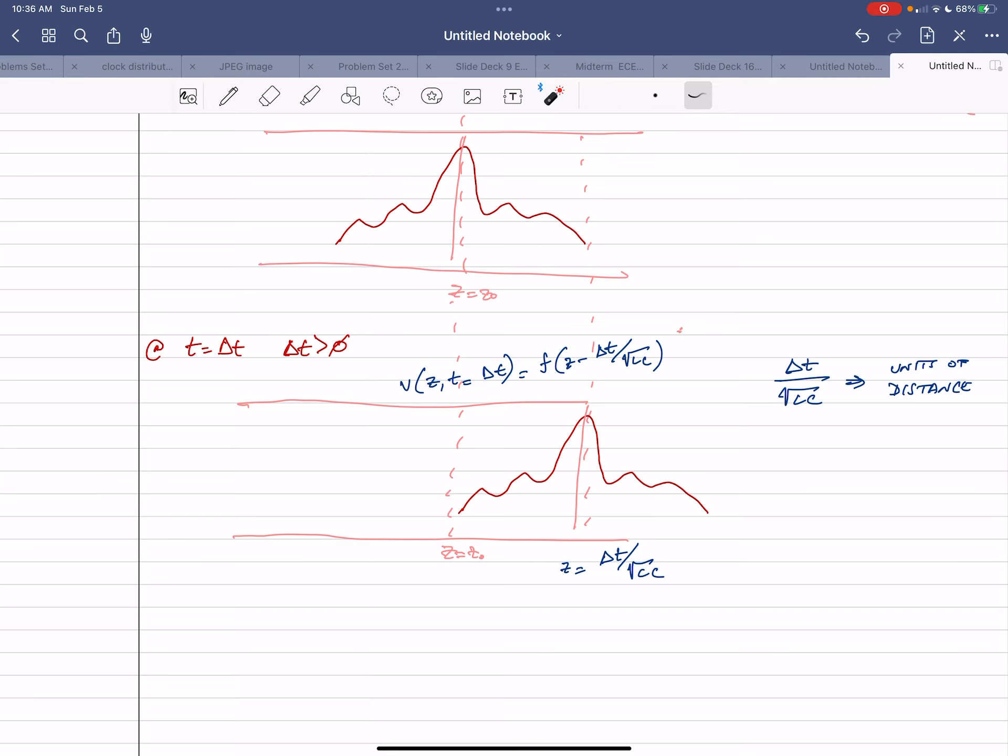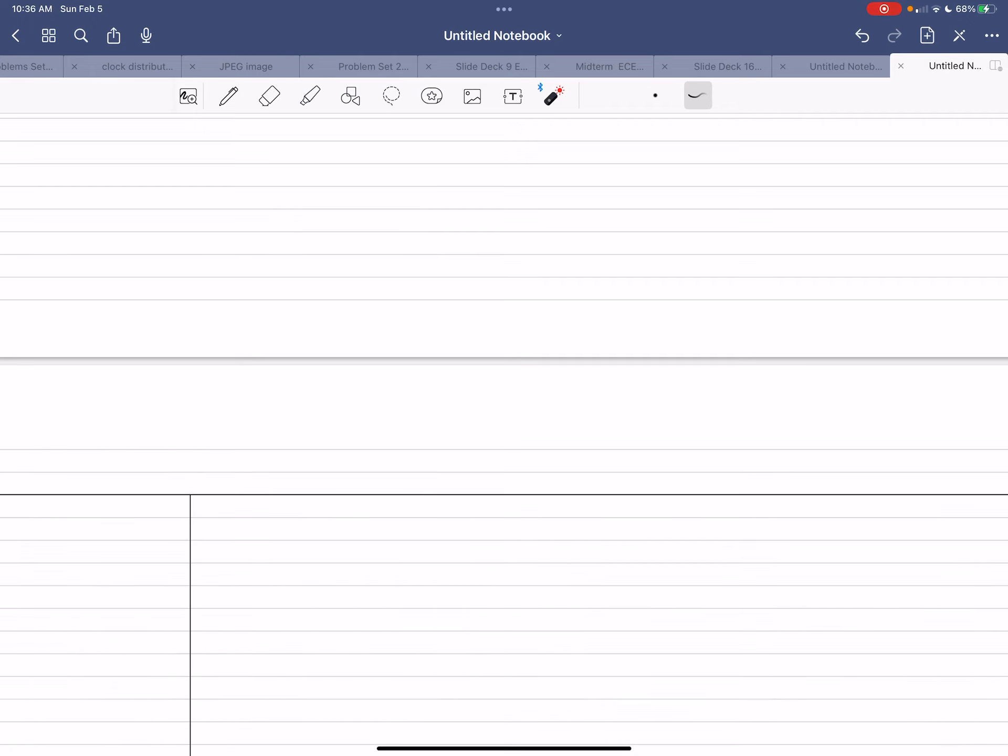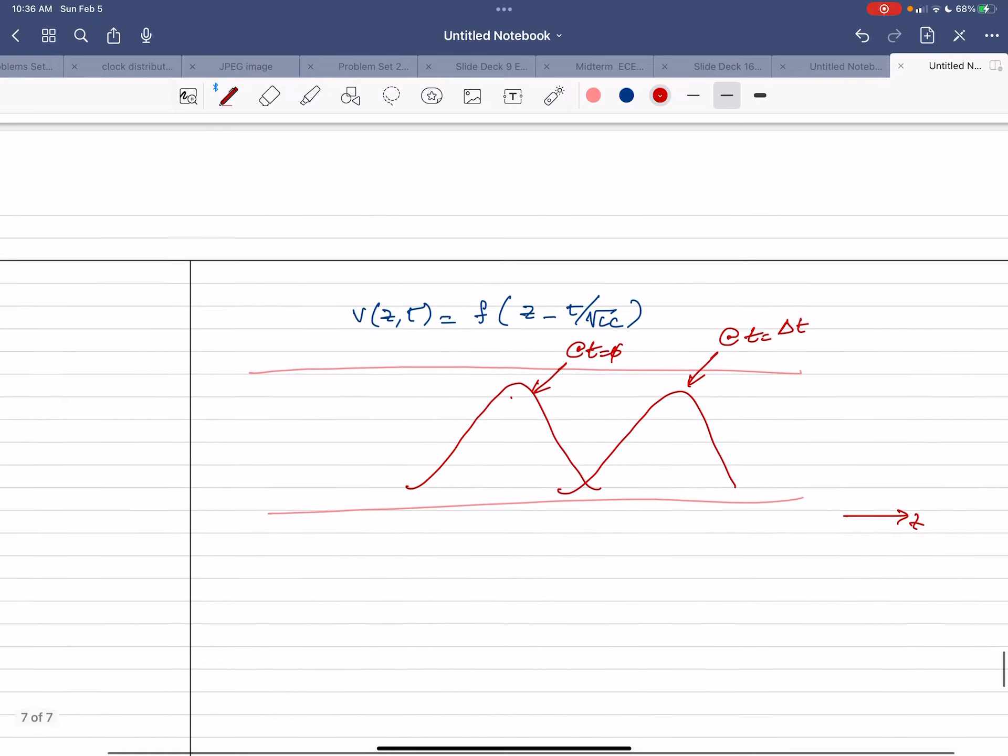So we looked at the case where the general solution is some function of z minus t over root LC. And that means that you could have a waveform that's moving with time. So this would be time at t equal to zero, and this would be at t is equal to delta t. And this is the direction of z. So it's traveling in that direction.